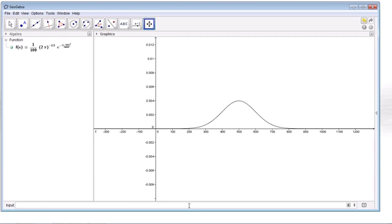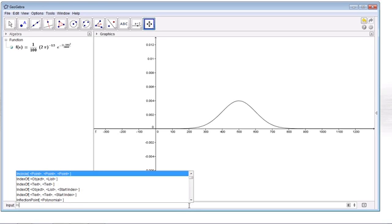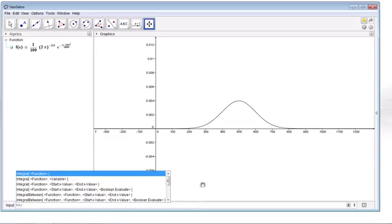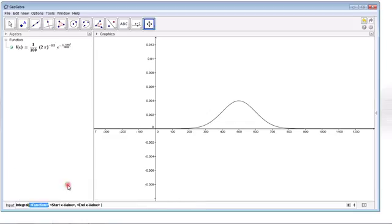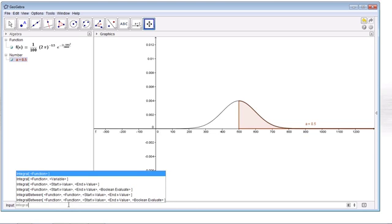And the cool thing about GeoGebra is that it can compute definite integrals for us pretty easily. I can just select from the drop-down the integral of f, and I want to start at 500, and I'm pressing tab to get from place to place. And I want to end, instead of just a decimal approximation, I can actually type infinity into GeoGebra, and it gives me the solution. This solution is telling us that 0.5, or 50%, of the students are scoring at a test score of 500 or greater.